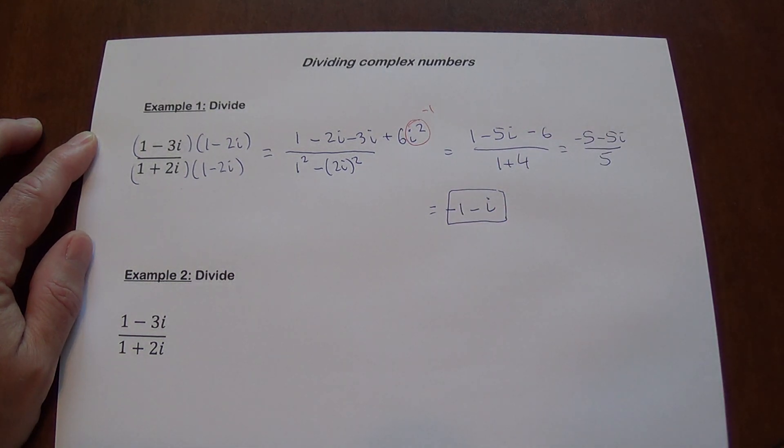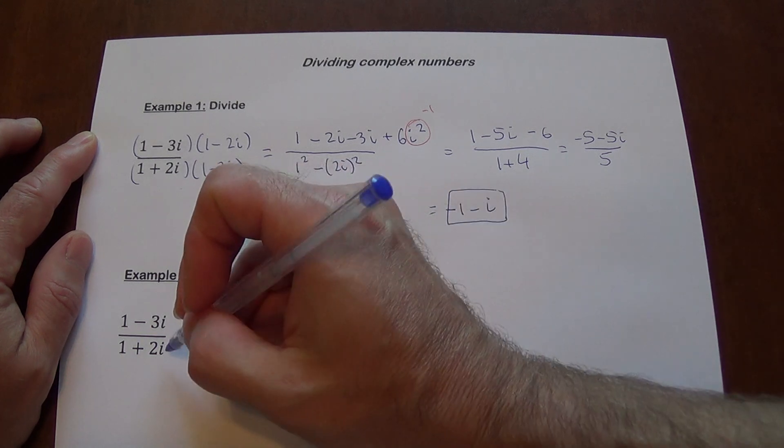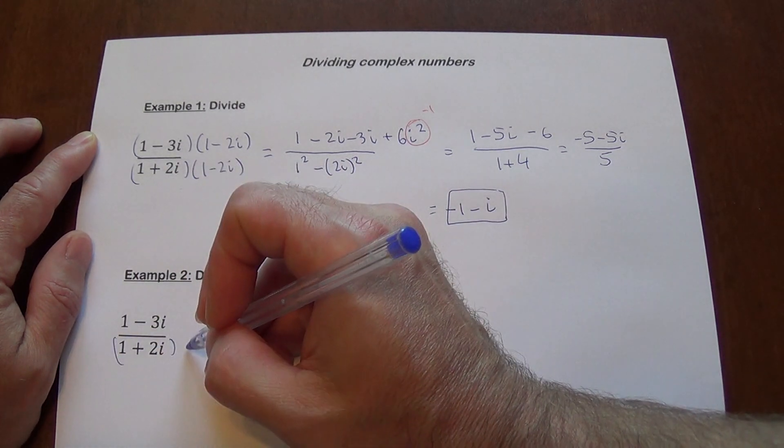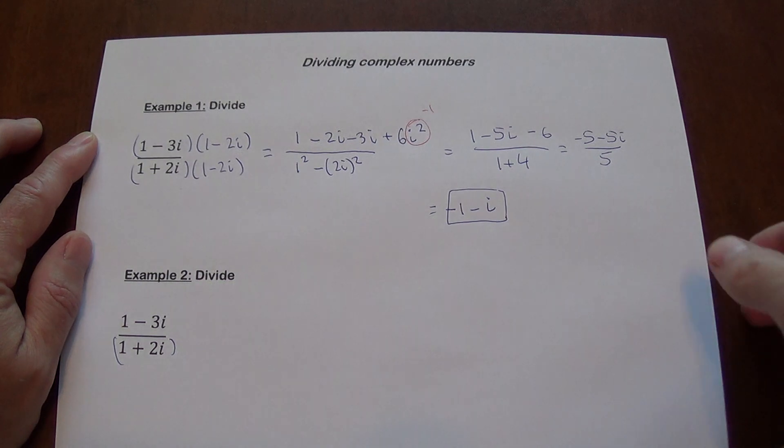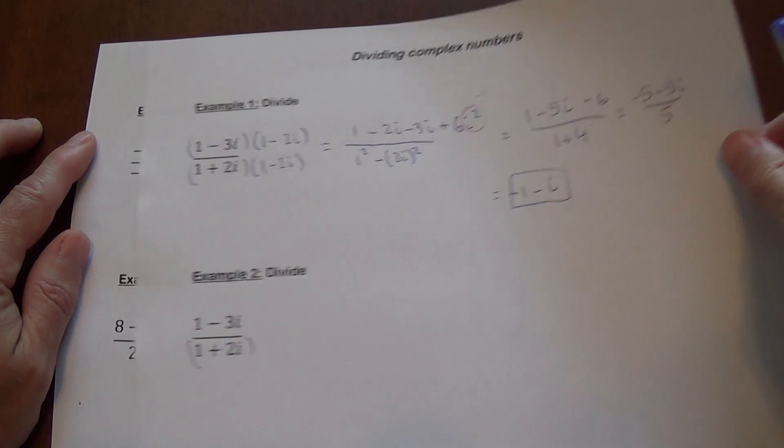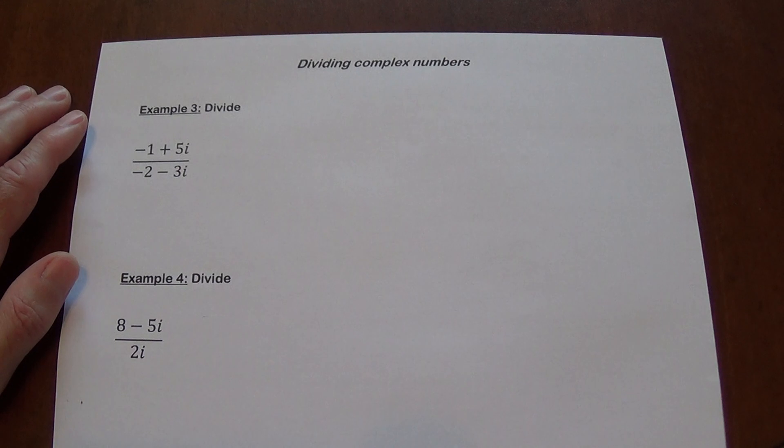Example 2, same kind of a problem, multiply by 1. It's actually exactly the same problem. Never mind. Moving on. My mistake. Example 3.